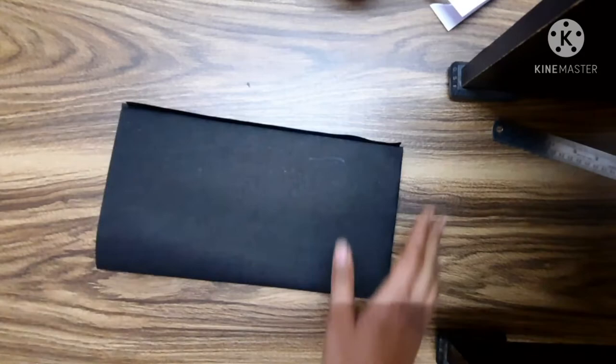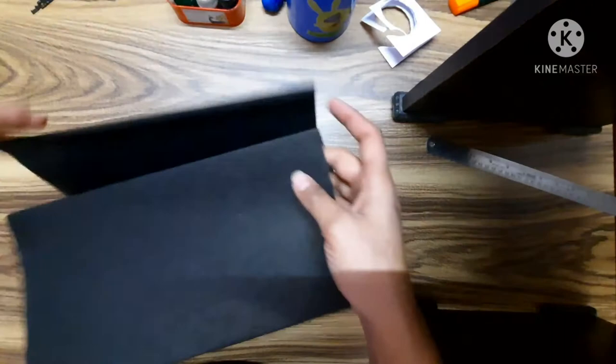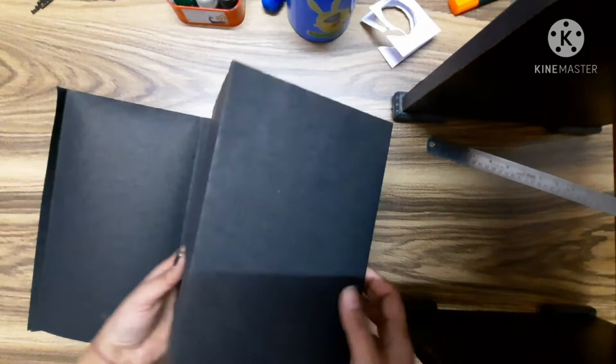The paper is folded. Now what you will do, you will open it and open it in a box shape, a rectangular box like this.